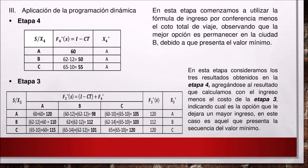Aplicación de la programación dinámica. Etapa 4: comenzamos a utilizar la fórmula de ingreso por conferencia menos el costo total de viaje, observando que la mejor opción es permanecer en la ciudad B, debido a que presenta el valor mínimo. Etapa 3: consideramos los tres resultados obtenidos en la etapa 4, agregando el resultado del ingreso menos el costo de la etapa 3, indicando cuál es la opción que dejará un mayor ingreso; en este caso, es aquel que presenta la secuencia del valor mínimo.